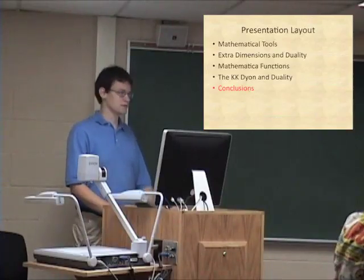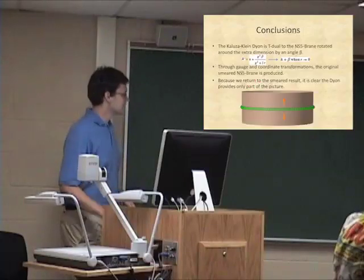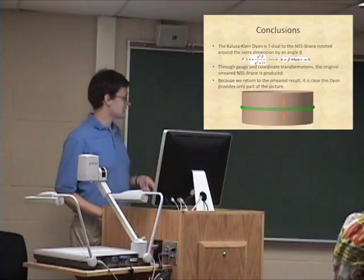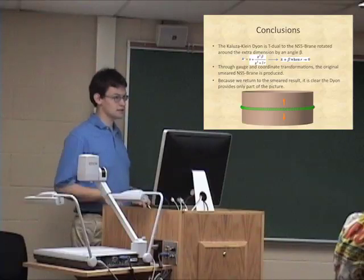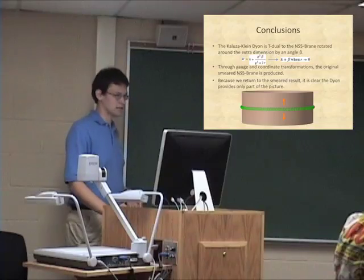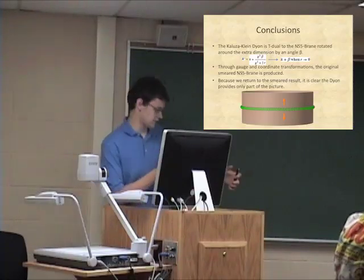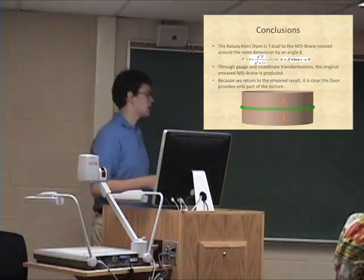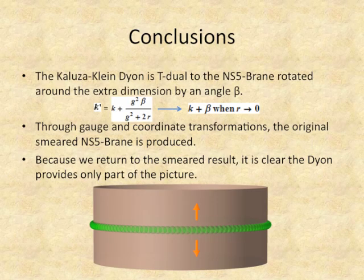Now it's time for conclusions. My conclusion is basically that the Kaluza-Klein dion is indeed T-dual to the NS5 brane. It's simply rotated around the extra dimension by some beta angle — that's just that extra parameter I talked about before. In the limit when R goes to zero, it simplifies down to just the original K plus beta, which tells us it's just switching the position by the angle beta.